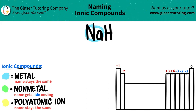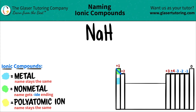sodium, which is Na, is over here and hydrogen is both in group one. Now here's the thing: everybody in group one are metals except for hydrogen. Hydrogen is a nonmetal. So sodium is going to be a metal while the hydrogen is a nonmetal.